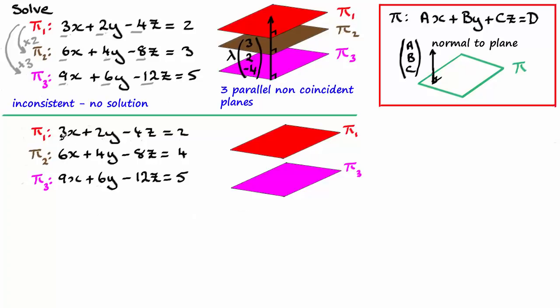But notice how in this example, if I take the three, the two and the negative four and also the two by multiplying this time by two, I get the six, the four and the minus eight as we did up here. But this time, two times two gives us that four. So what I've got here is essentially the same plane. Pi one and pi two are the same planes.